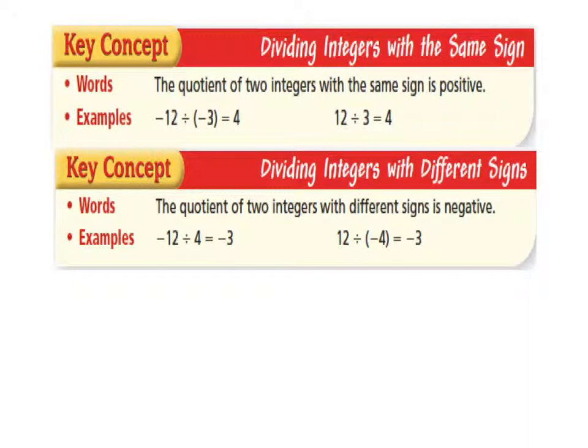Here you'll find two key concepts on dividing integers, one with the same sign and one with different signs. What's great about this is dividing and multiplying have the same rules. The quotient of two integers with the same sign is positive. The quotient of two integers with different signs is negative.